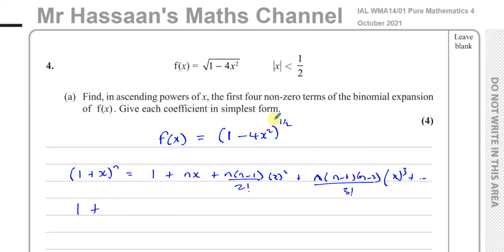So you're going to do 1 plus n, which is the power a half, times the x, which is minus 4x squared, including its sign, plus n times n minus 1, which is a half times a half minus 1, which is negative a half, over 2 factorial, which is 2 times 1, times minus 4x squared to the power of 2. And then you're going to have plus a half times minus a half times minus 3 over 2, take away 1, over 3 factorial, which is 3 times 2 times 1, times minus 4x squared to the power of 3.